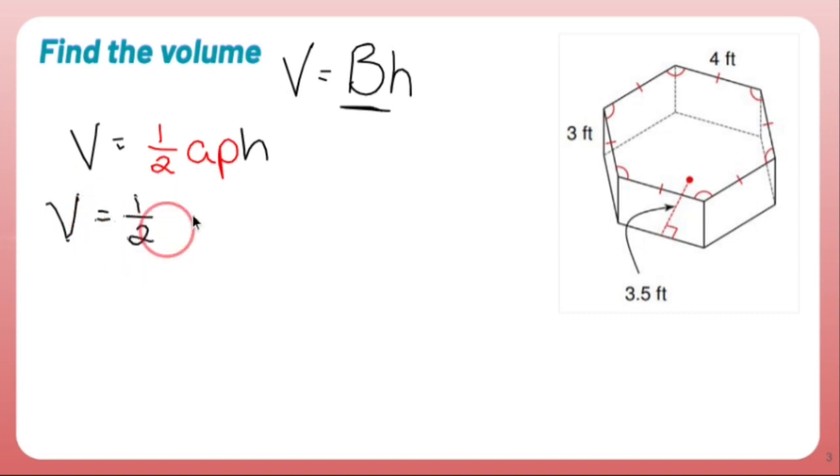So one half times the apothem is 3.5 times the perimeter. Now what we have is a hexagon, which means there's six sides. All of these sides are four feet. So the perimeter is going to be four feet six times. That's four, not 0.4, times six. Now we're going to multiply that by the height, which appears to be three feet.